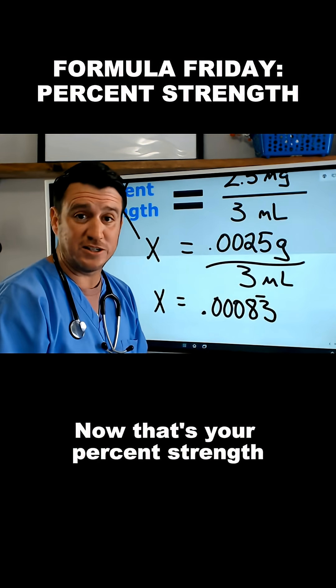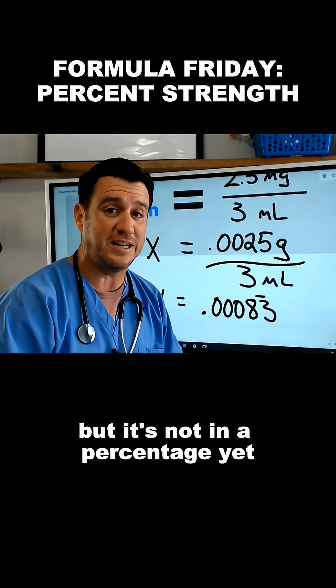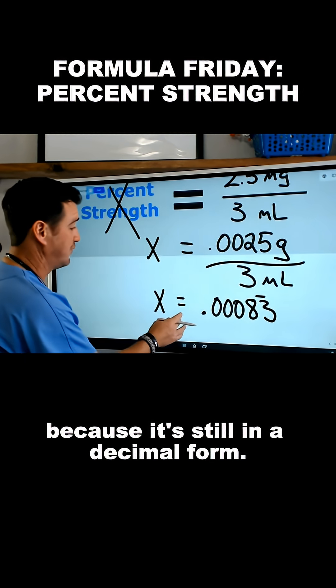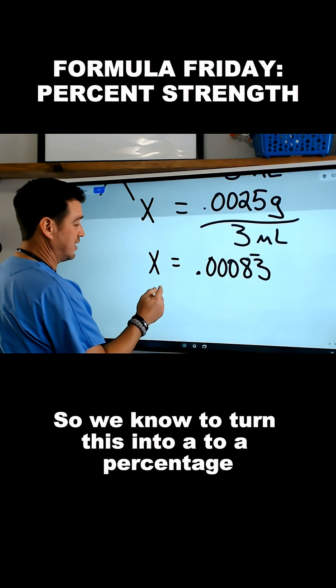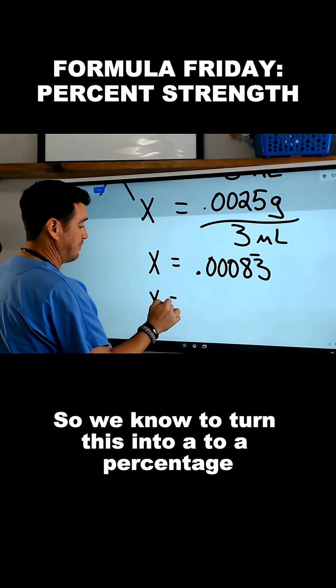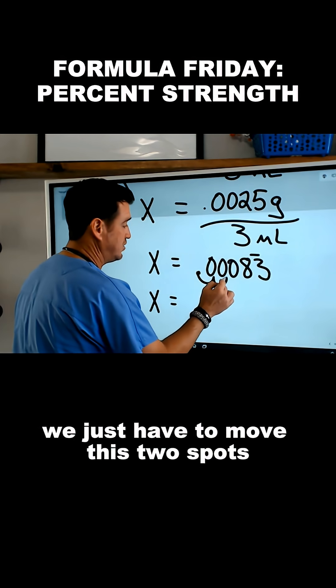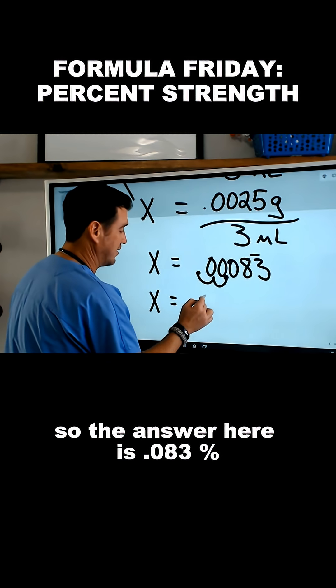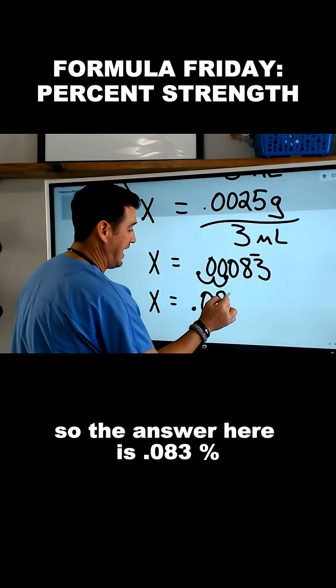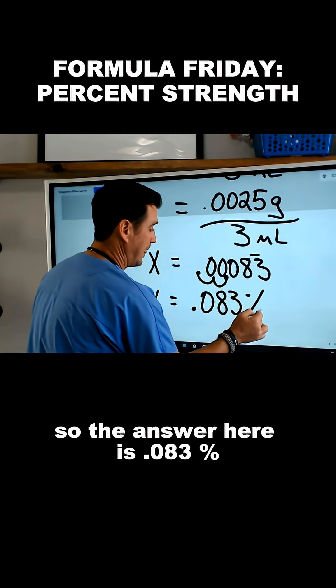Now that's your percent strength, but it's not in a percentage yet because it's still in a decimal form. So we know to turn this into a percentage, we just have to move this two spots. So the answer here is 0.083 percent.